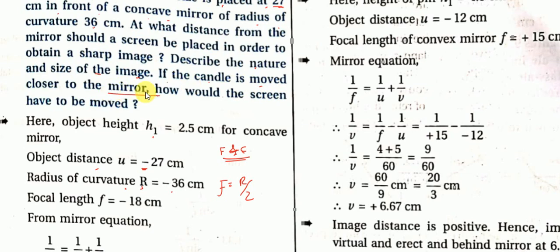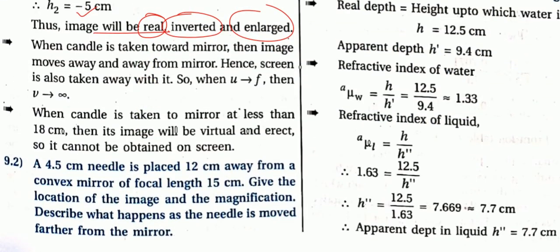Supplementary question: if the candle is moved closer to the mirror, how would the screen need to move? When the candle moves toward the mirror, the object moves from between C and F toward F. As the object approaches F, the image moves farther and farther away from the mirror — toward infinity.